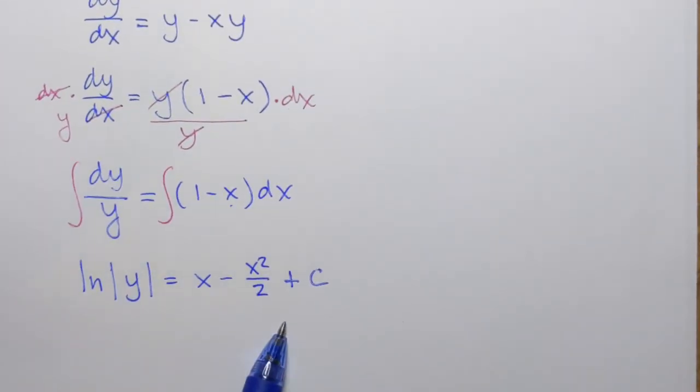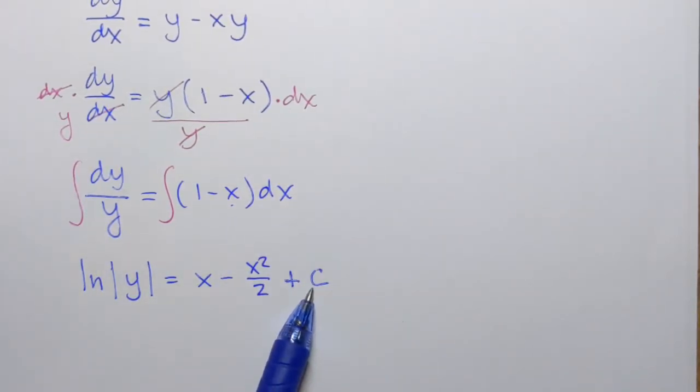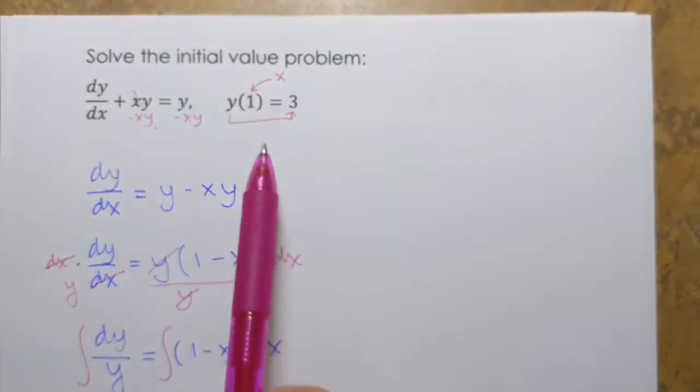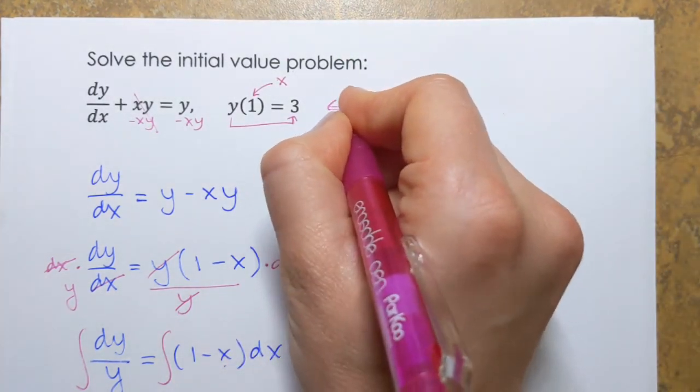It's written in the implicit form, but this is a family of functions. The solution represents family of functions because of this arbitrary constant c. It can take upon any value and that creates infinitely many functions, but we're looking for one specific function. We're solving the initial value problem. In other words, we're given the initial condition y of 1 equals 3. This is called initial condition.